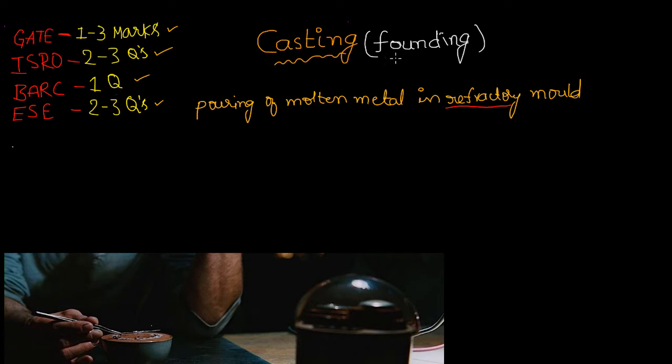Most of the people don't know this. Make a note. Casting has three main characteristics, I mean unique characteristics that no other manufacturing process have. What are those? The first one: no size limitation.